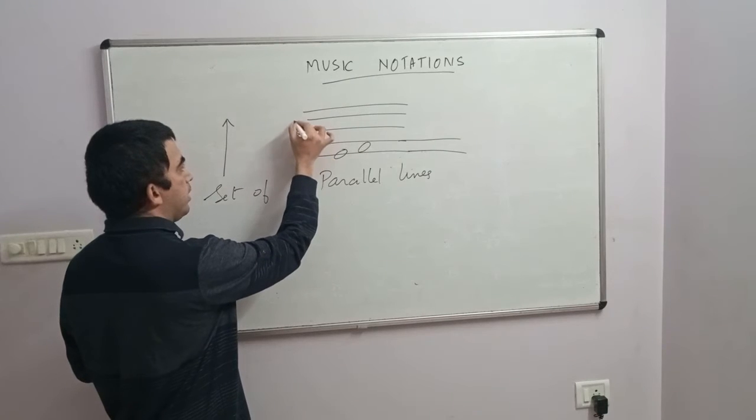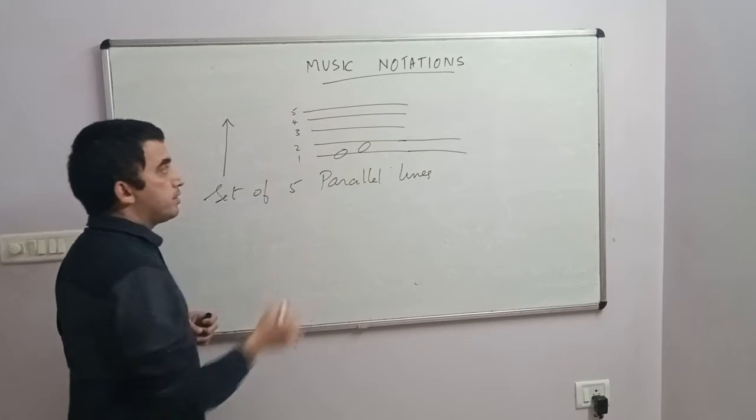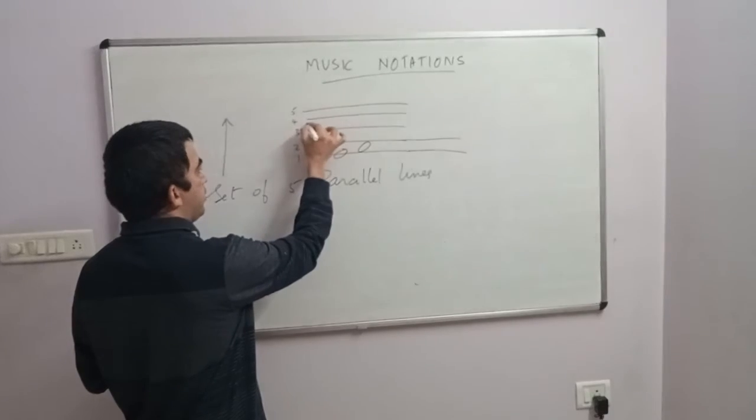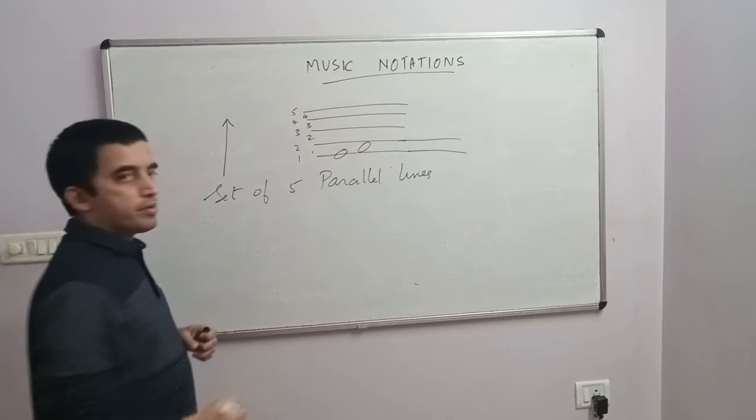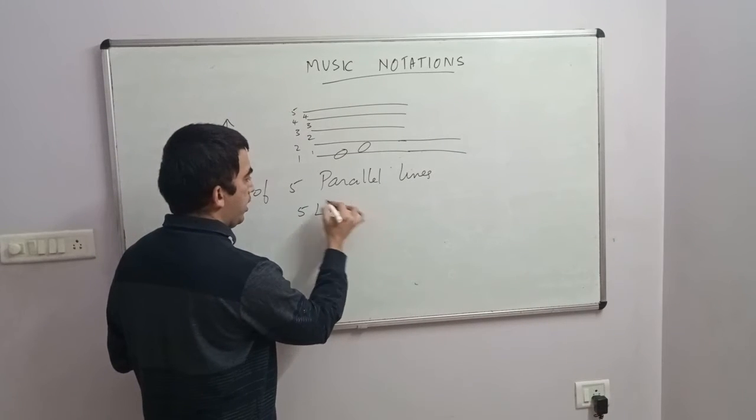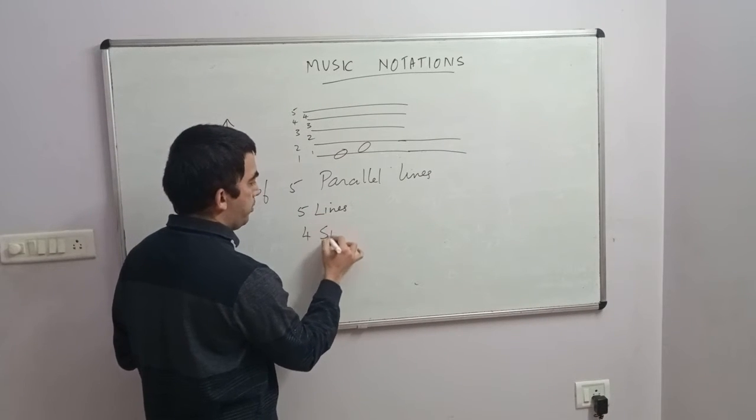This will be the first line, second line, third line, fourth line, and the fifth line. Similarly, this will be the first space, second space, third space, and the fourth space. So we'll have five lines and four spaces.